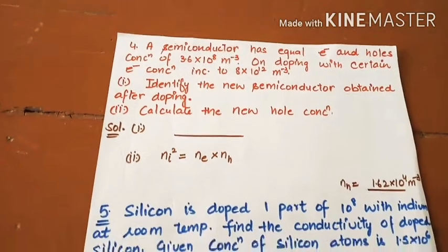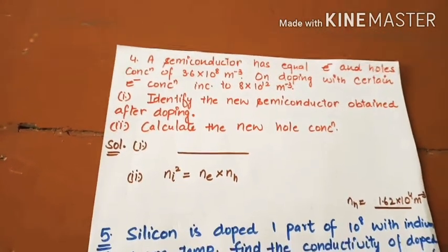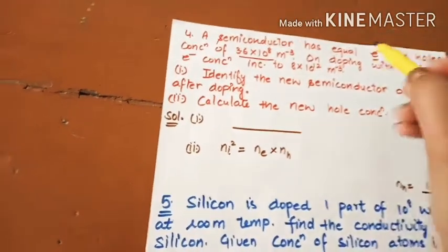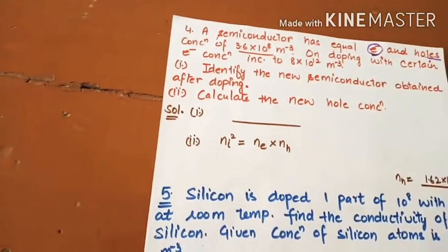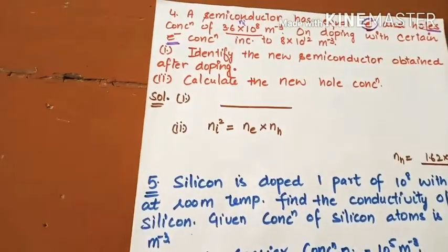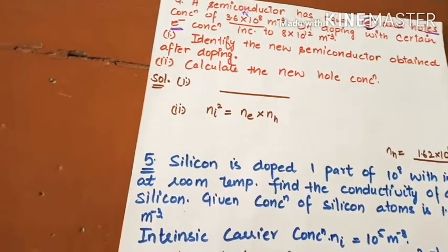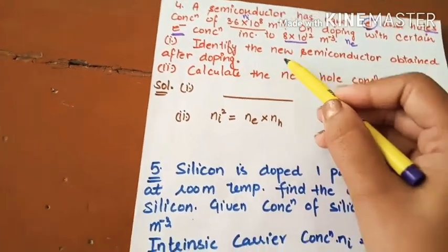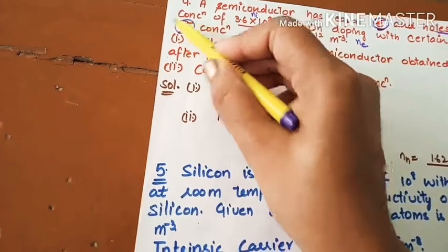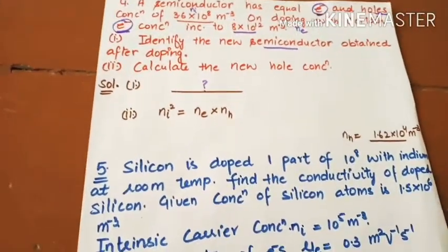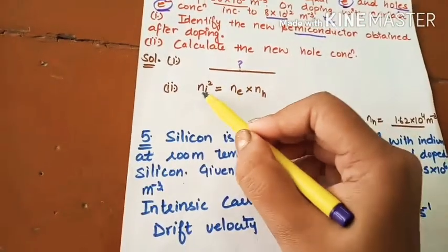Next one: A semiconductor has equal electron and hole concentration. On doping with arsenic, the electron concentration increases. This is an n-type semiconductor. Identify the new semiconductor obtained after doping and find the new hole concentration.